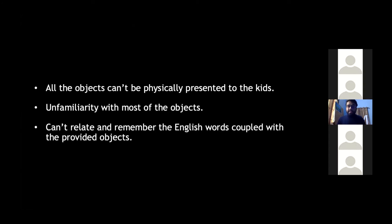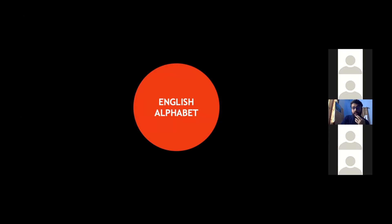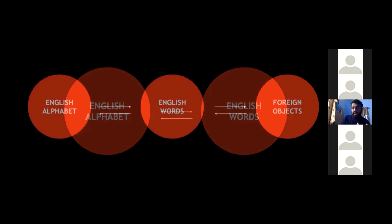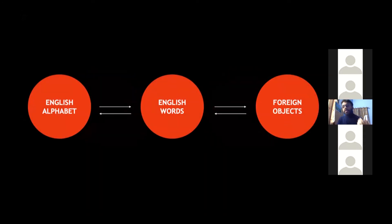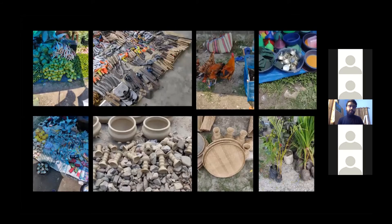From the initial approaches, we discovered that the English alphabet was being taught using English words, and those words were further coupled with foreign objects. We then went ahead with exploration in the nearby town, collecting different objects — those locally made, locally produced, or at least available in the region where the school is based — so that children encounter these things in their daily lives and are already familiar with them.